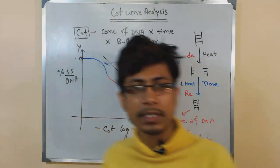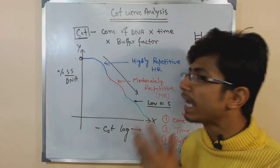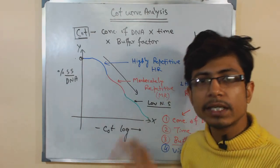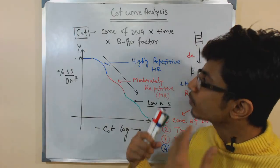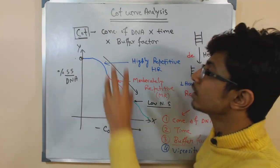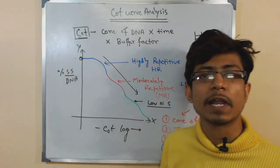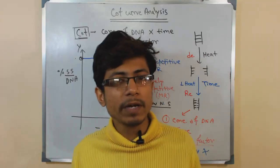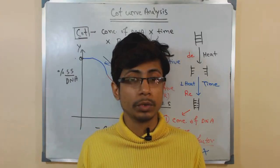For these reasons — to understand so many valuable properties of DNA — we denature the DNA with heat, then allow time for it to re-anneal, obtain the cot value, and analyze the cot curve. That is the importance of cot curve analysis. This has been a simplified version of what the cot curve is.